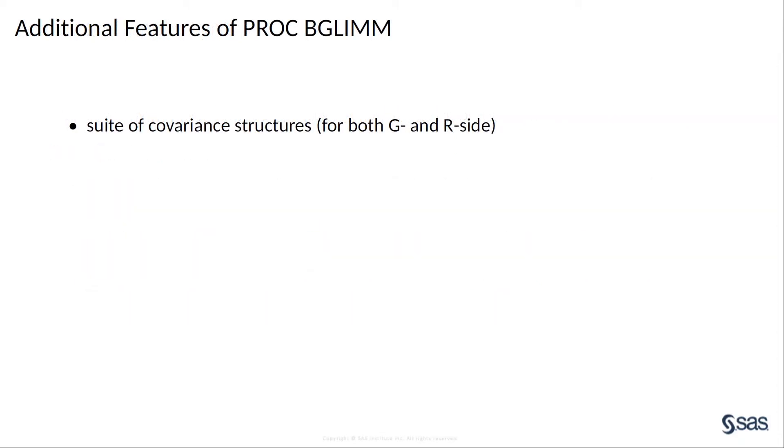Here are some other useful features. In PROC BGLIM, there are 13 types of covariance structure available, ranging from the simple diagonal VC type to CS to AR1, all the way up to unstructured UN type for both the R-side and G-side.